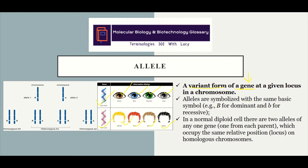Alleles are symbolized using the same basic symbol. For example, we use a B, where the capital letter stands for dominant and the lowercase stands for a recessive alternate form of a gene. Now when we use the words dominant and recessive,